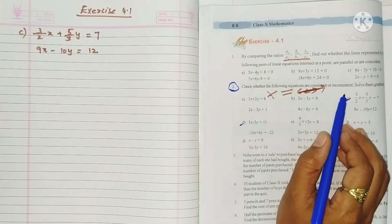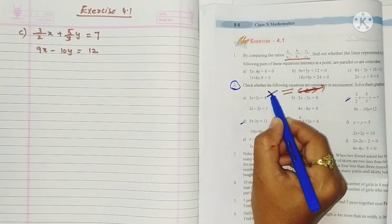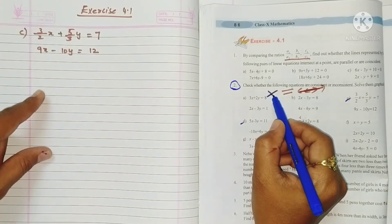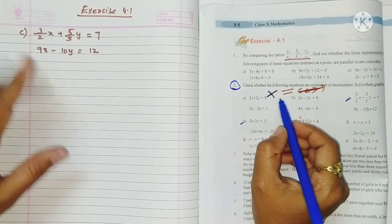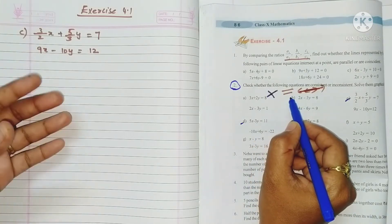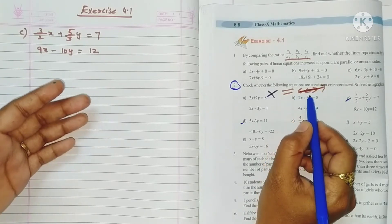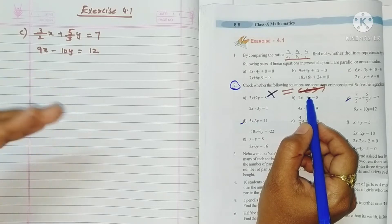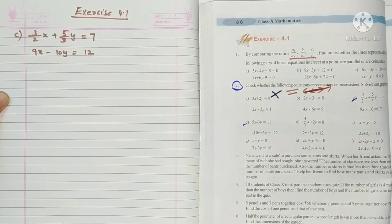If two lines are intersecting they are consistent and they have one solution. Otherwise they are inconsistent. If two lines are parallel there is no solution, so inconsistent. If two lines intersect they have one solution and are consistent.